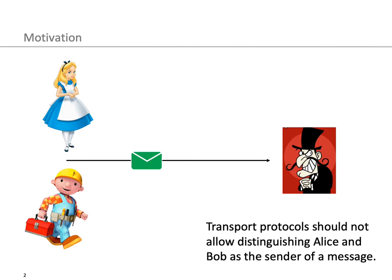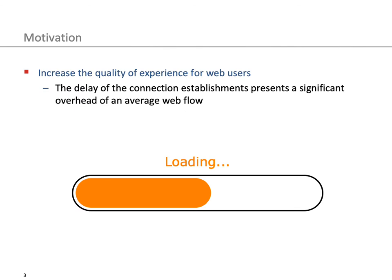Transport protocols are important to protect the user's privacy. Transport protocols such as TCP fast open should not allow distinguishing Alice and Bob as the sender of a message. The quality of experience for web users increases significantly if they don't have to wait for websites to load. The TCP fast open protocol aims to optimize performance by reducing the delay of connection establishment during reconnections to the same server. The question arises whether we can further optimize the performance of the TCP fast open protocol.